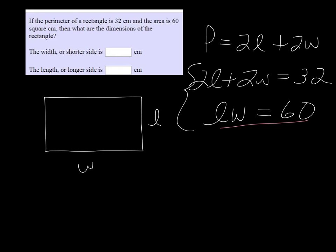So if I divide both sides by l, then w is equal to 60 over l. And I could substitute that in for w on the other equation.